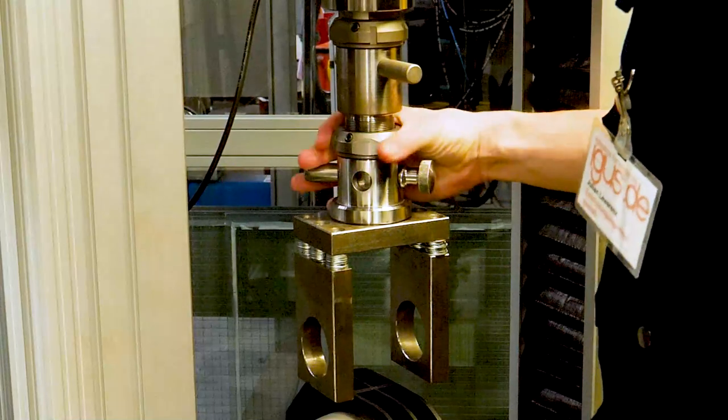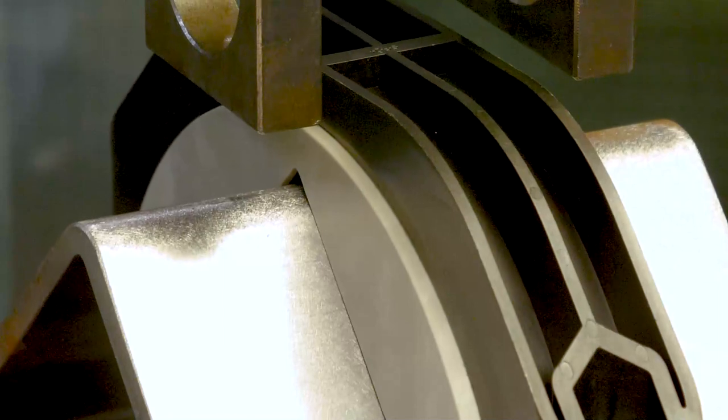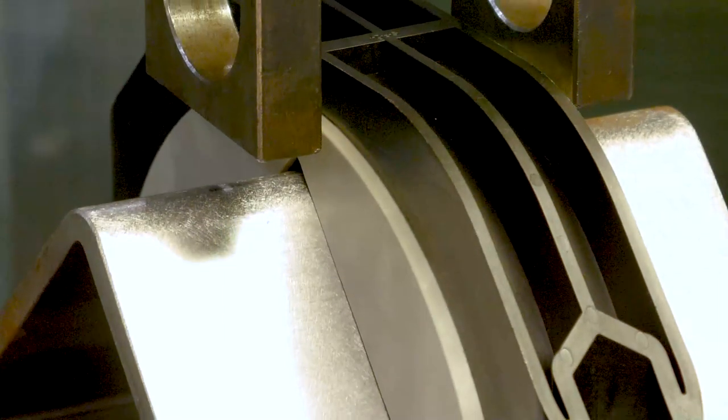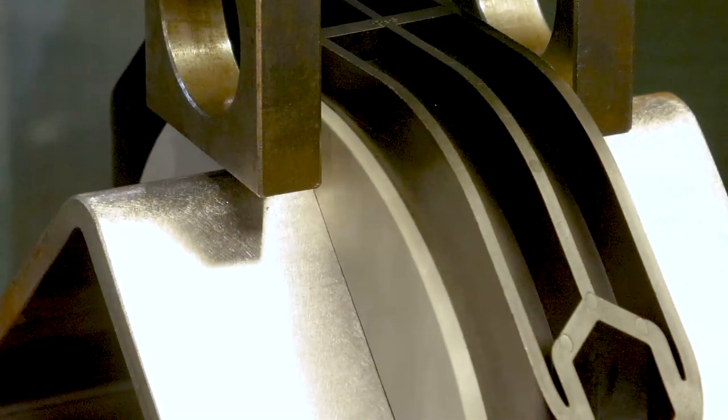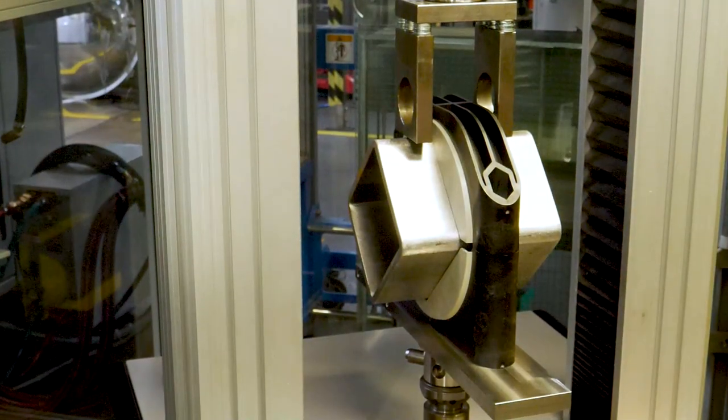Then a clevis is mounted on the traverse of the testing machine. The profile is turned into the right position and the clevis is placed just above the profile. This is the starting point of the test.